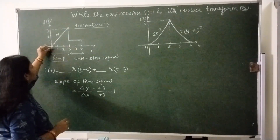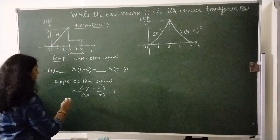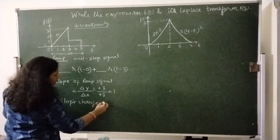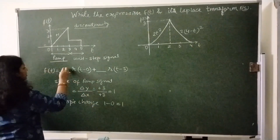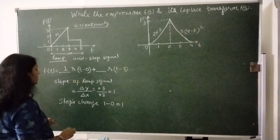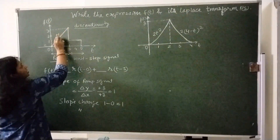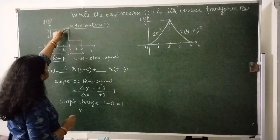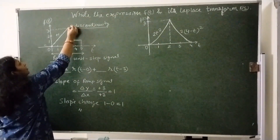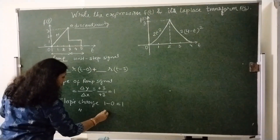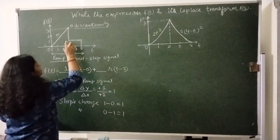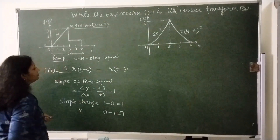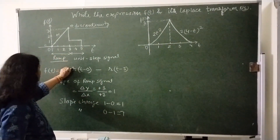Now calculate the difference of slope. Initially it was 0 and finally it was 1, so the slope change at t equals 0 is 1 minus 0 which equals 1. This slope change will come with this term. Now slope change at t equals 3: initially it is plus 1 and later it becomes 0, so finally it is 0 and initially it was 1. The slope change is minus 1 at this point, so we write a minus term here. We can remove the 1 from here.